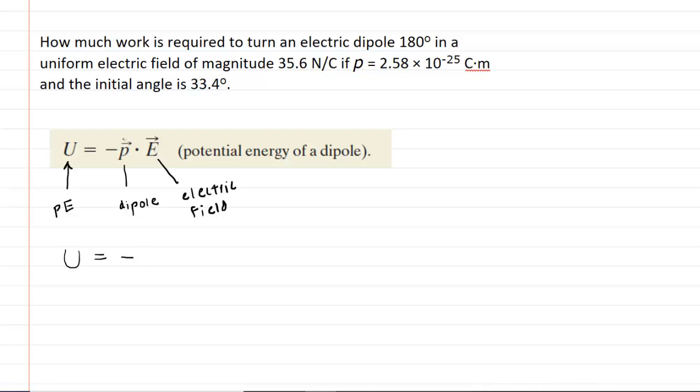Now by magnitude, we can drop this little vector notation. So we would just use the letter P for the magnitude of the electric dipole. And then for the electric field, again, we would just put in the magnitude of the electric field. And then we would multiply by the cosine of the angle between these two vectors, between the electric dipole and the electric field. So this is a very important equation that we're going to be needing.